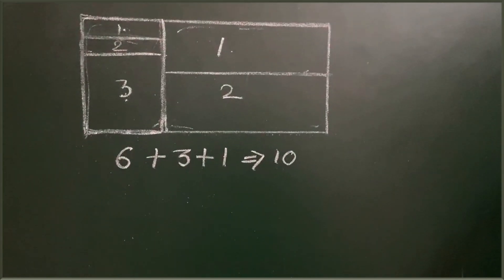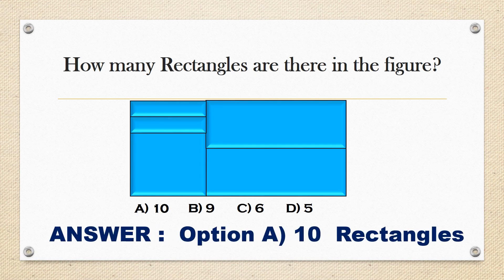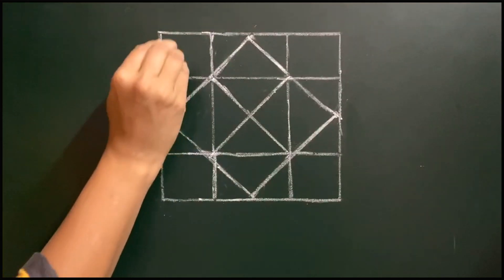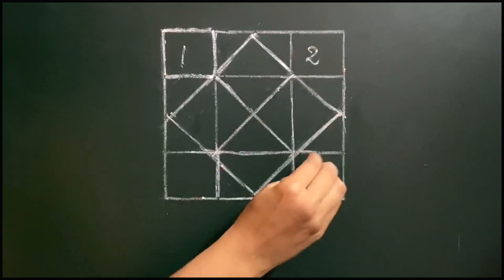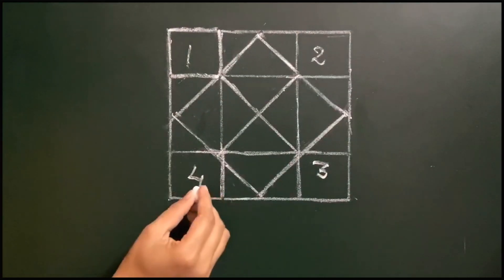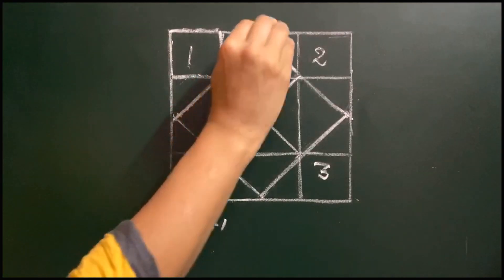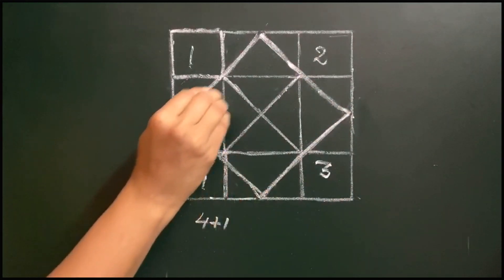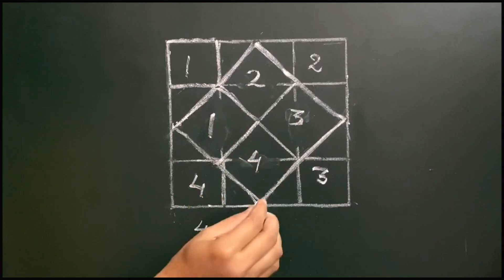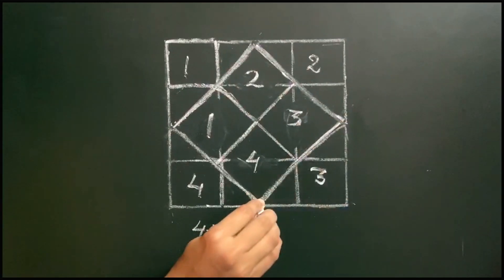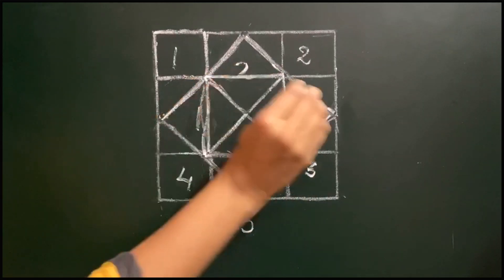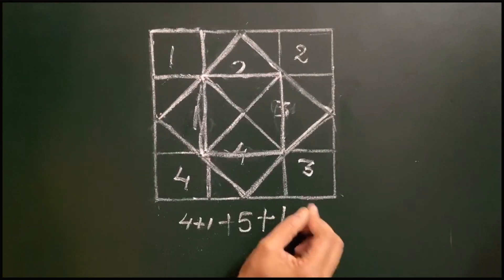Squares in this figure. Let's count: 1, 2, 3, and this 4. Next this 4, this 4, so 4 plus 1 is 5. Next let's take this part: this 1, 2, 3, 4, and this whole 1 makes 5, plus this middle part — the middle 1 is a square. So total it's 11 squares in this figure.